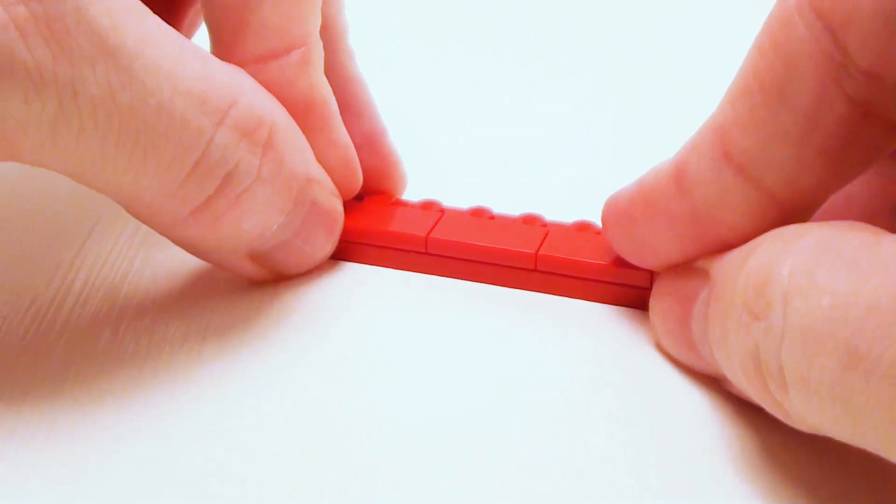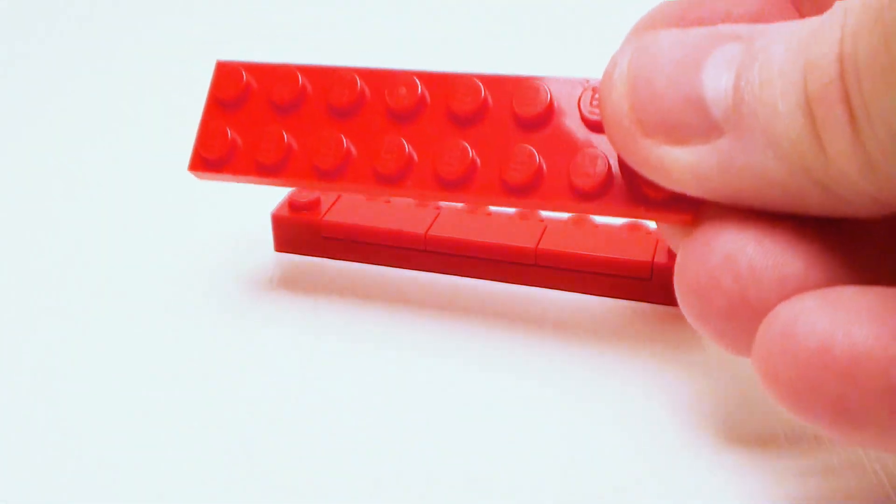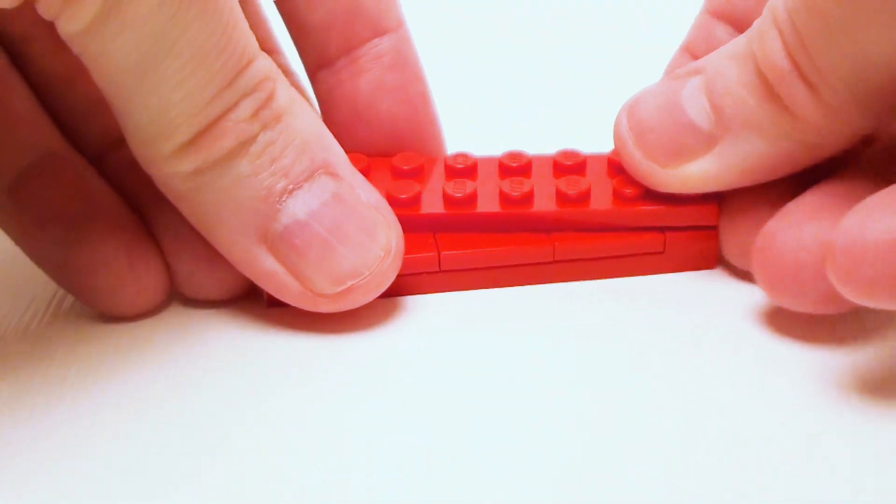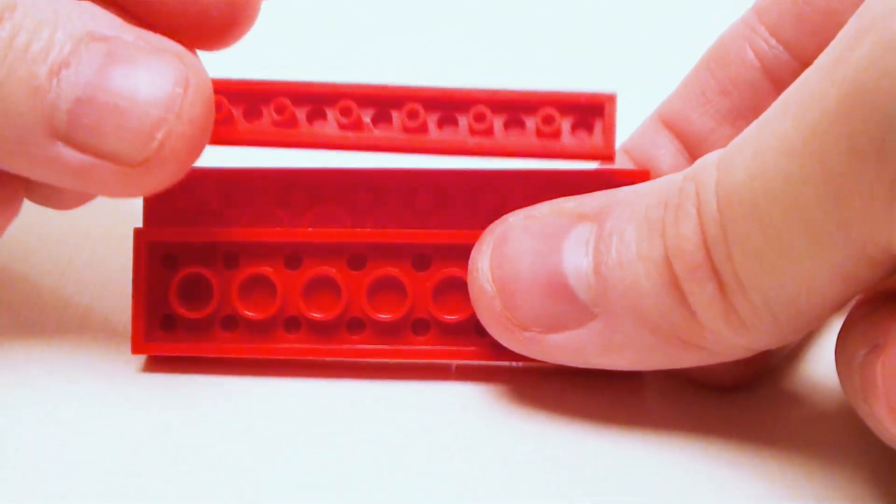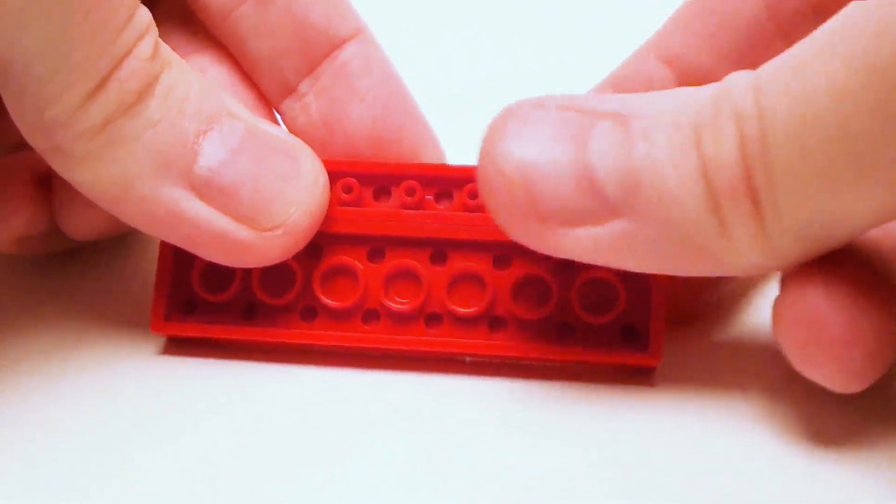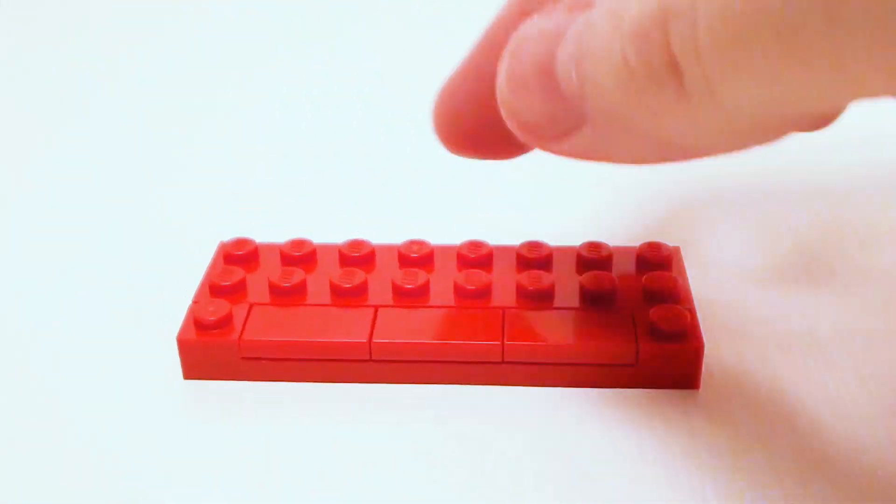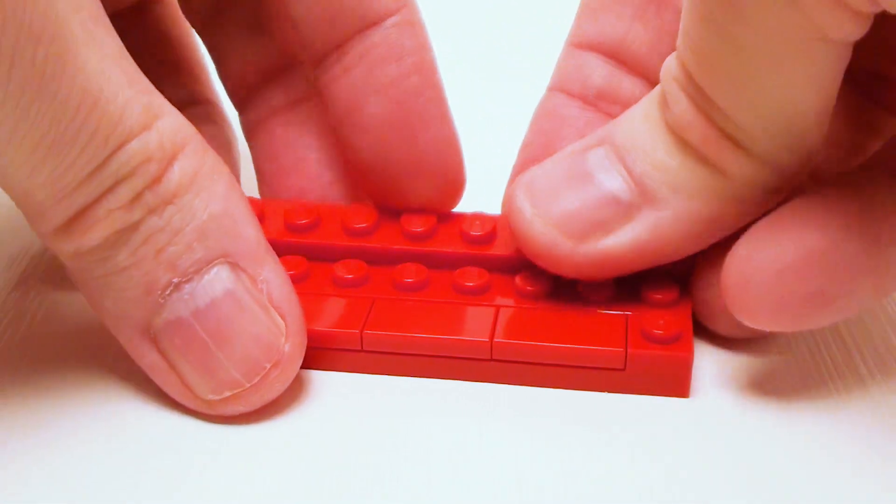Let's set down a 2 by 8 plate in the back. Let's flip this over, we're going to set a 1 by 8 plate to fill in this area. Flip it over again and in the back a 1 by 8 plate.